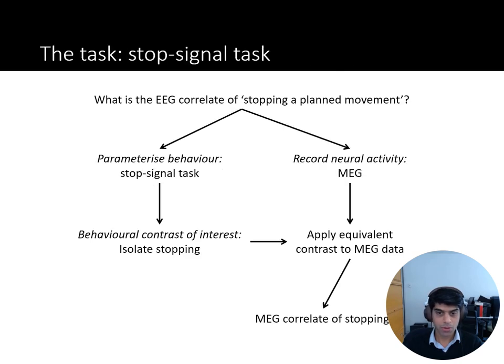Let's go for an example question we might be asking in neuroscience. So here the question is, what's the EEG correlate of stopping a planned movement? For that we need to have a particular task, the stop signal task, parameterize our behavior, and from that we need to extract the contrast between conditions that we're interested in. Here we're going to isolate stopping, so I'm just about to start a movement but I don't execute that pre-planned movement. What's the EEG correlate of that? To find that, we need to be recording neural activity. We're going to use MEG data and apply the same behavioral contrast to the MEG data to get that correlate of stopping.